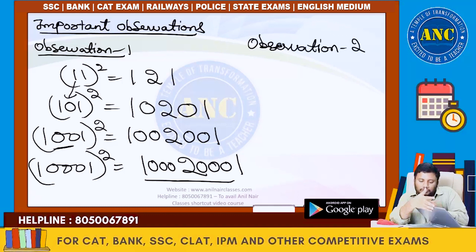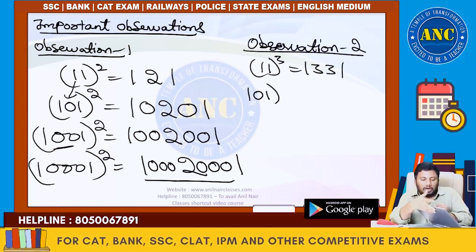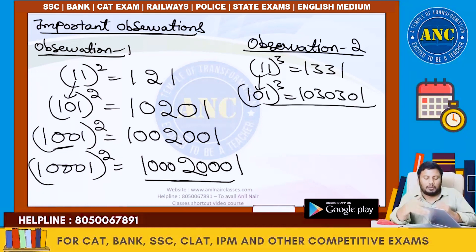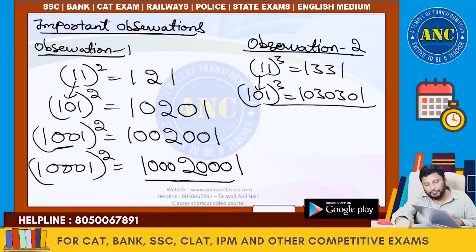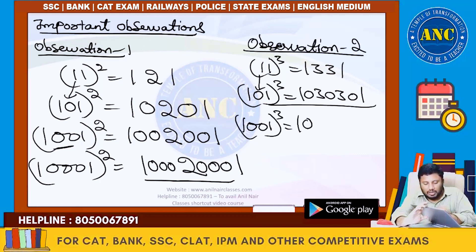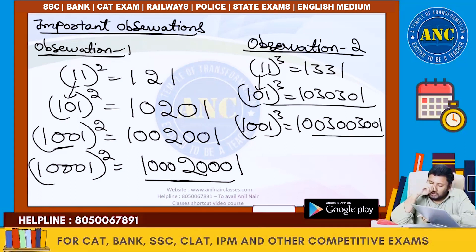Observation 2 — same observation but also in cubes. 11 cubed is 1331. 101 cubed: between two digits there is a zero. Please write down. If it is 1001 cubed — two zeros — the result is 1003003001. I hope it is clear.